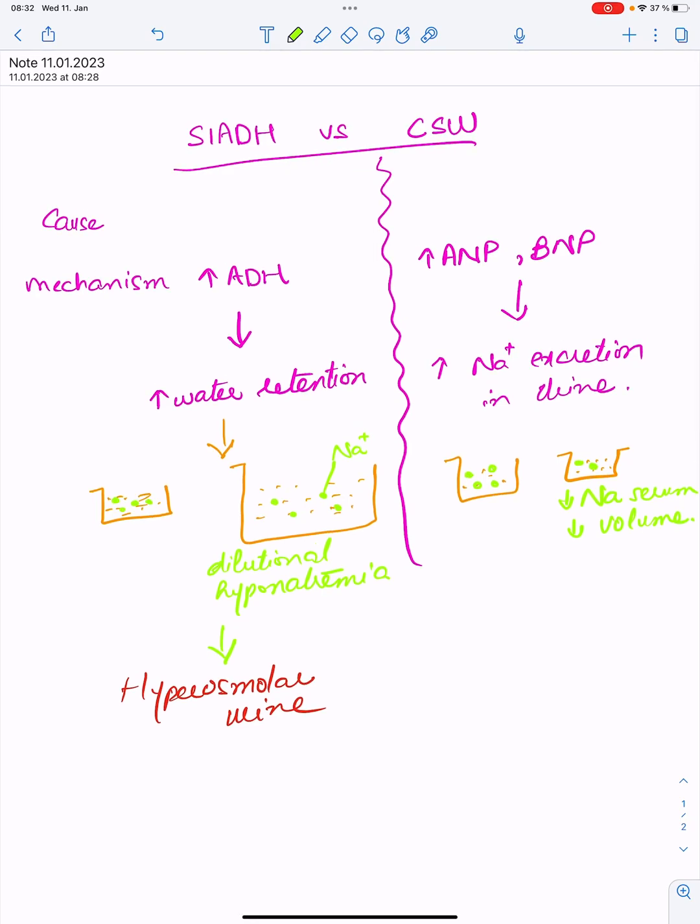SIADH state is mostly euvolemic state or it can be hypervolemic, and CSW is mostly hypovolemic state. The urine will be here also hyperosmolar, but it is because there is increase in sodium excretion.